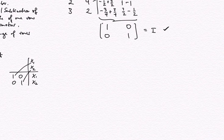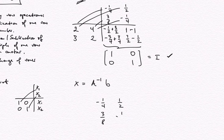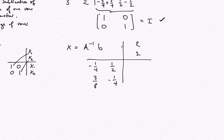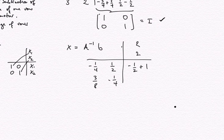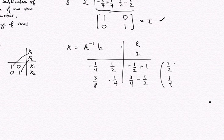Now let's check the recipe x equals A inverse times b. We compute: (−1/4, 1/2; 3/8, −1/4) times (2, 2). This gives: −1/4 times 2 plus 1/2 times 2 equals −1/2 plus 1 equals 1/2, and 3/8 times 2 minus 1/4 times 2 equals 3/4 minus 1/2 equals 1/4. So x equals (1/2, 1/4), which is indeed our solution — that checks out as well.